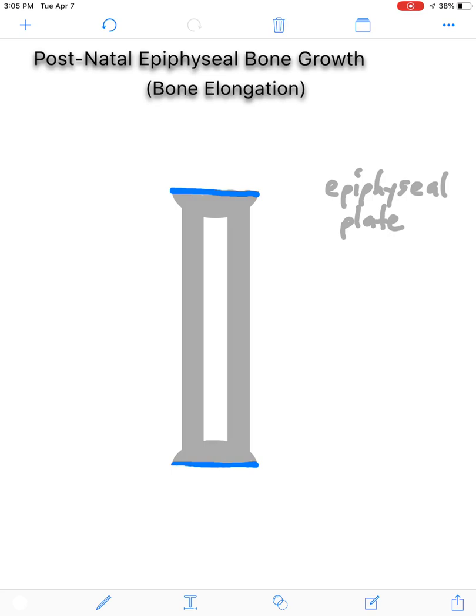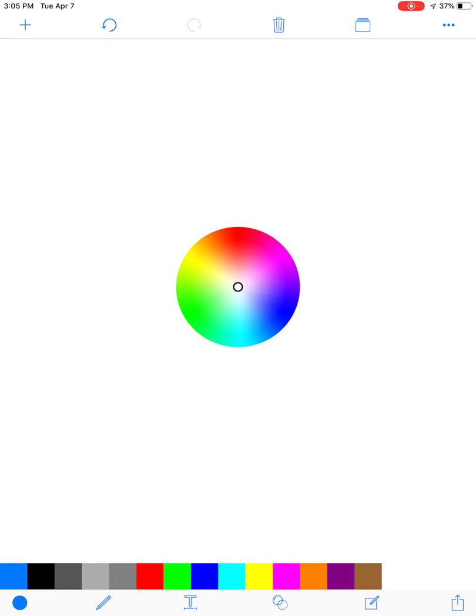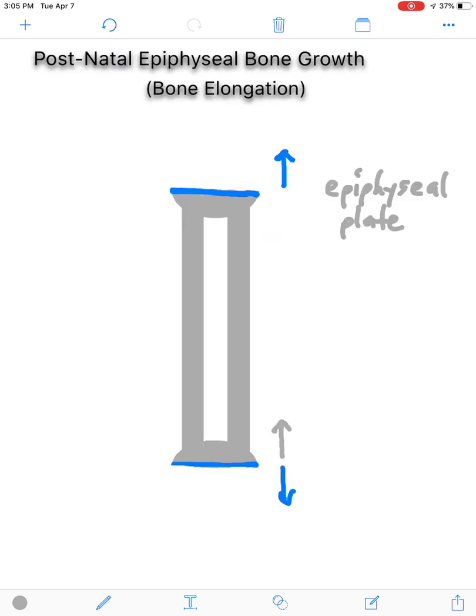So, throughout this, we will have new cartilage being added in these directions. The old cartilage will become bone in this direction. So, in other words, as new cartilage is being added, the old cartilage is becoming calcified and becoming bone. This is really important, the fact that cartilage is replenished throughout, so that way you can continue to make more and more bone from the old cartilage. If this did not occur, then you would never get bones elongating to the appropriate size needed.